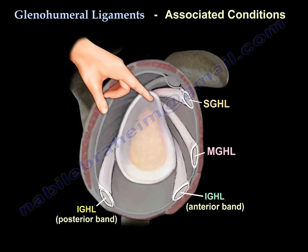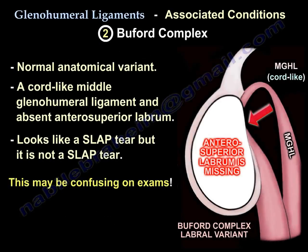The middle glenohumeral ligament is associated with the Buford complex, which is a normal anatomical variant consisting of a cord-like middle glenohumeral ligament and an absent anterior superior labrum. It looks like a SLAP tear, but it is not a SLAP tear. This may be confusing on board examinations.